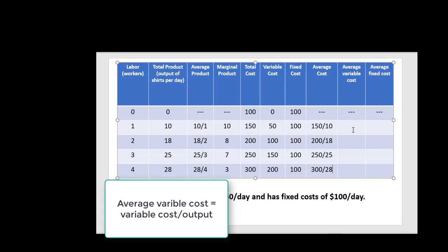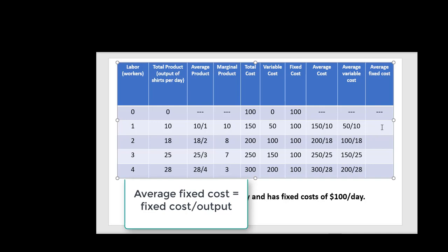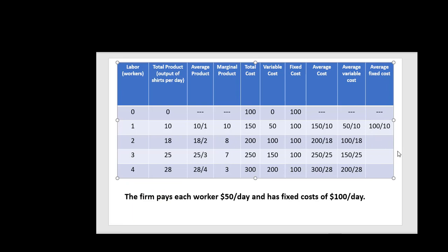Let's move on to average variable cost. We're going to take the variable cost number and divide it by output: 50 divided by 10, then 100 divided by 18, then 150 divided by 25, and finally 200 divided by 28. And then we have average fixed cost, which is the fixed cost of $100 divided by output: 100 divided by 10, 100 divided by 18, 100 divided by 25, and finally 100 divided by 28.